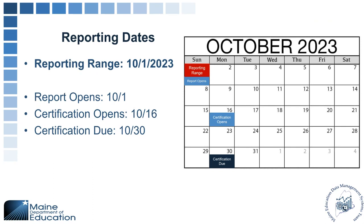Key dates for this report: the reporting range is 10-1-2023, which is a Sunday this year, so it's important to make sure that students are enrolled on October 1 in order to be counted. The report will open on 10-1 and will be generating through 10-15. Certification opens on the 16th and is due on the 30th of October.